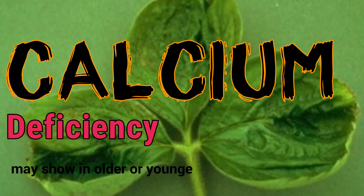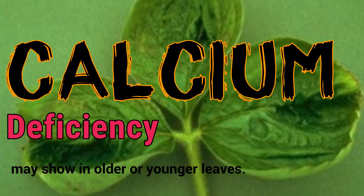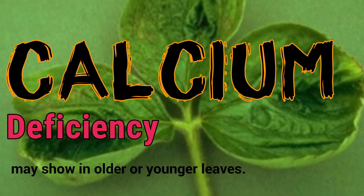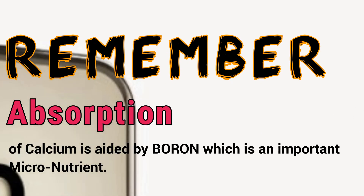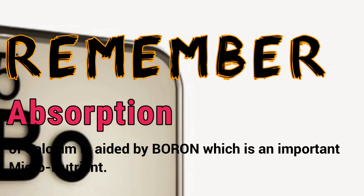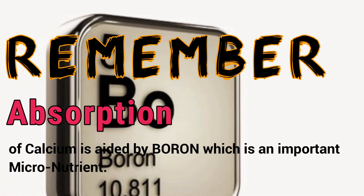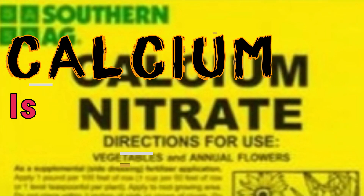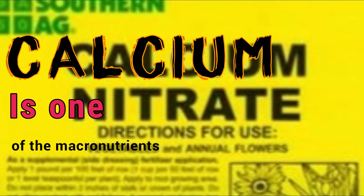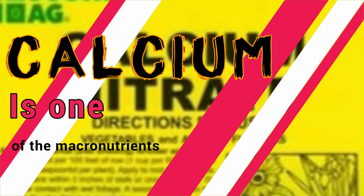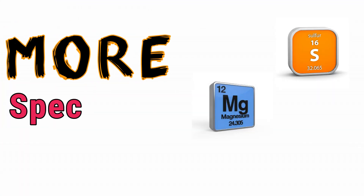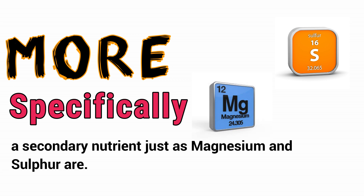Calcium deficiency may show in older or younger leaves. Remember, absorption of calcium is aided by boron, which is an important micronutrient. Calcium is one of the macronutrients — more specifically, a secondary nutrient, just like magnesium and sulfur are.